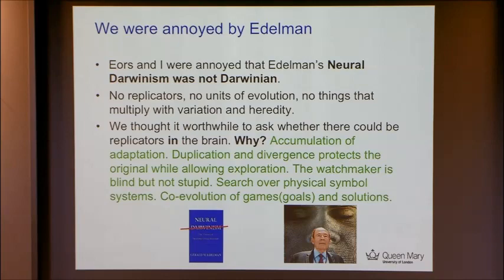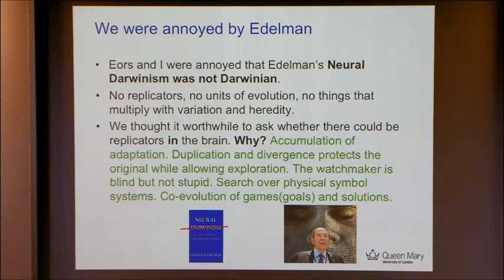We were annoyed by Gerald Edelman, because Gerald Edelman has a theory called Neural Darwinism, which is not Darwinian at all. In fact, he's probably held the theory of Neural Darwinism back by some decades. After a careful reading of Edelman, there are no replicators, no units of evolution, no things that multiply with variation and heredity in his theory.